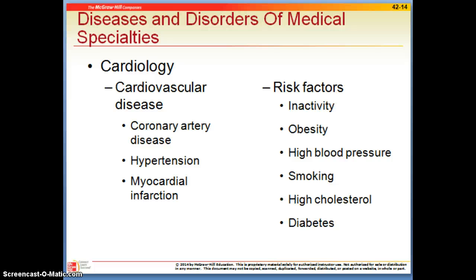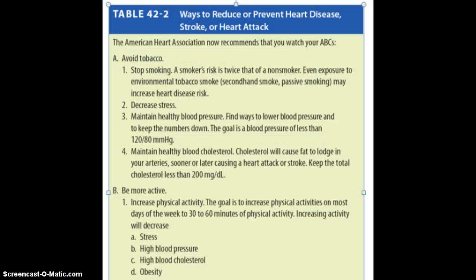This picture in your notes packet shows the outline for high-risk factors for heart disease — Table 42-2 in your textbook — which contains guidelines from the American Heart Association. Their recommendations include avoiding tobacco, since a smoker's risk of heart attack, stroke, or heart disease is almost twice that of a non-smoker. Blood pressure should be kept at 120 over 80 or less.